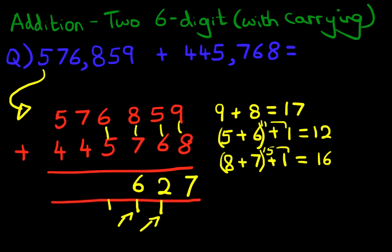Now let's add the thousands column. We have 6 plus 5 plus 1. You know the routine? The 1 is over there. So how do we do this? Well, 6 plus 5 is 11. And then we add the 1. It's 12. So let's write that down. We put 1 here and 2 over here.